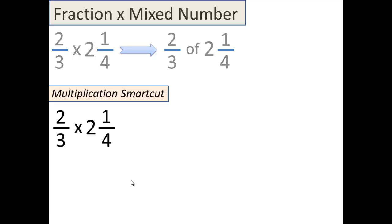Now, we know the shortcut with multiplication is about shoot, shoot, reduce, but you have to do something to the mixed number first. Go ahead and whisper to your neighbor, what do we have to do to the mixed number first?